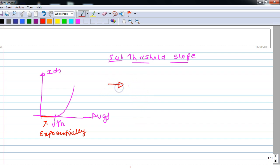If I represent the same diagram by plotting the current in log scale, it will look something like this. The current above Vth is more or less a constant, which is called as the on current. And below Vth, the current actually falls exponentially. And because I am plotting the current in log scale, we actually see some kind of slope over here.